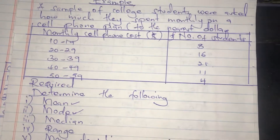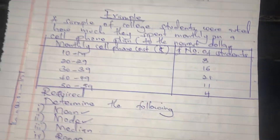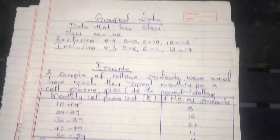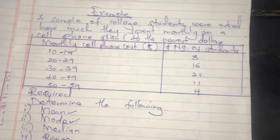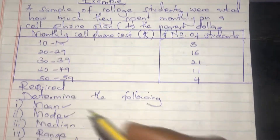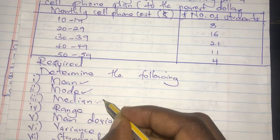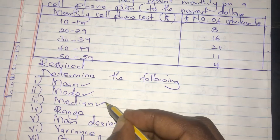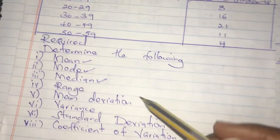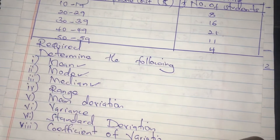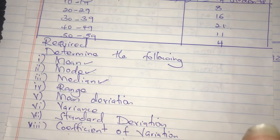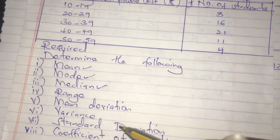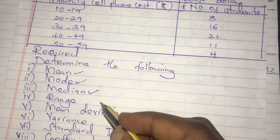Welcome to my channel. We are still dealing with grouped data. We are done with calculating the median for grouped data, and now we are going to the measures of dispersion. In this video, we are going to look at range and mean deviation.